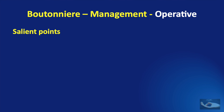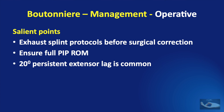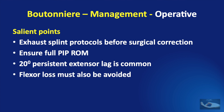There are 4 salient points regarding the operative management of chronic Boutonniere deformity. We must exhaust all splint protocols before planning surgical correction. If surgery is planned, we must ensure a full passive range of movements at the PIP joint. We must remember that even after surgery there may be a 20-degree persistent extensor lag at the PIP joint. And we must never trade gaining extension at the PIP joint at the cost of losing flexor function.